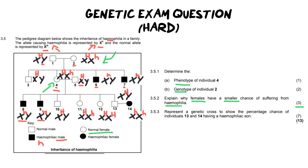Now the final question says represent a genetic cross. So we're going to do a whole genetic cross with P1 and F1 and all of the Punnett squares and the pheno and genotypes. And we're going to calculate the percentage chance of individuals 13 and 14 having a hemophiliac son. And so at the very end of this, you must make sure that you provide the percentage. And this is the percentage chance of having a hemophiliac son. Now I'm going to show you what that looks like now in the memo.